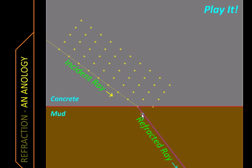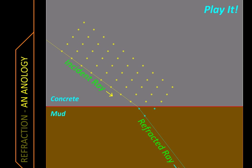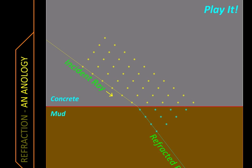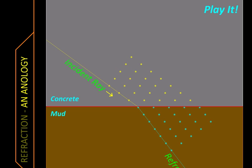Now you might think why the soldier has taken a turn. Well, when he stepped on the mud, one foot on the mud would cover a shorter stride than the other foot on concrete. And even the soldier himself will be facing in a different direction. This trend continues as more and more soldiers keep stepping onto the mud and moving slower, and this makes the whole column deviate from its original direction.